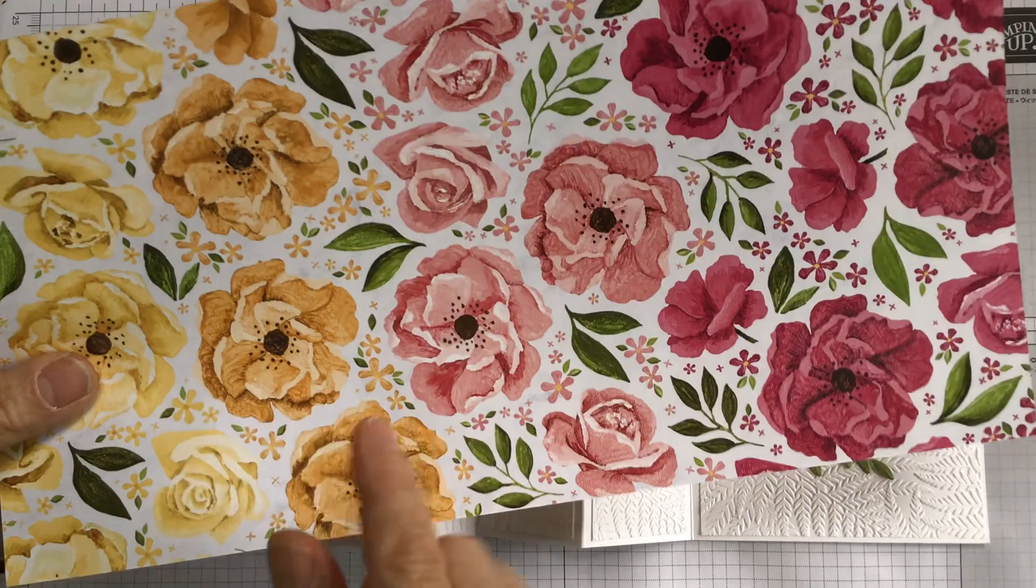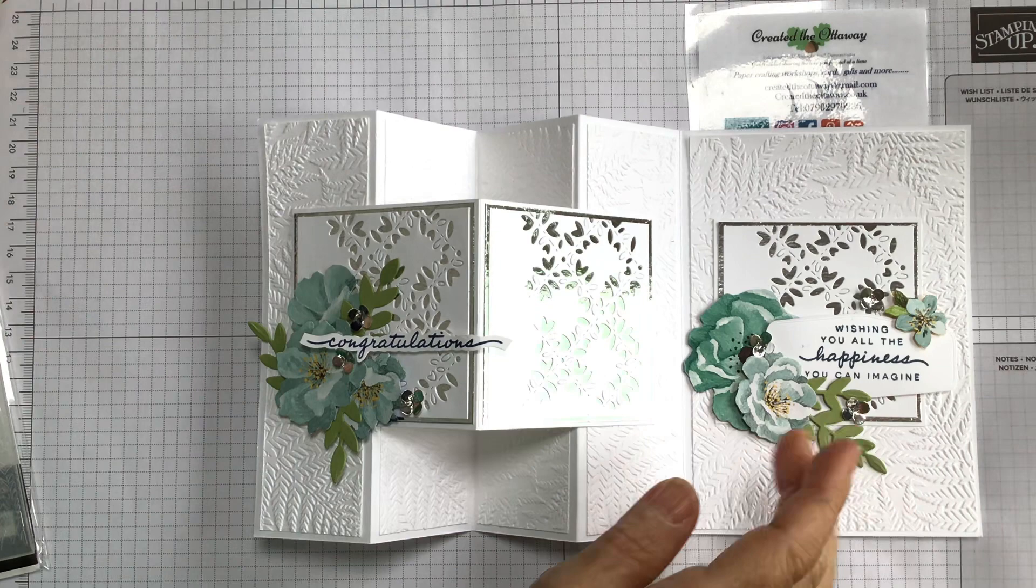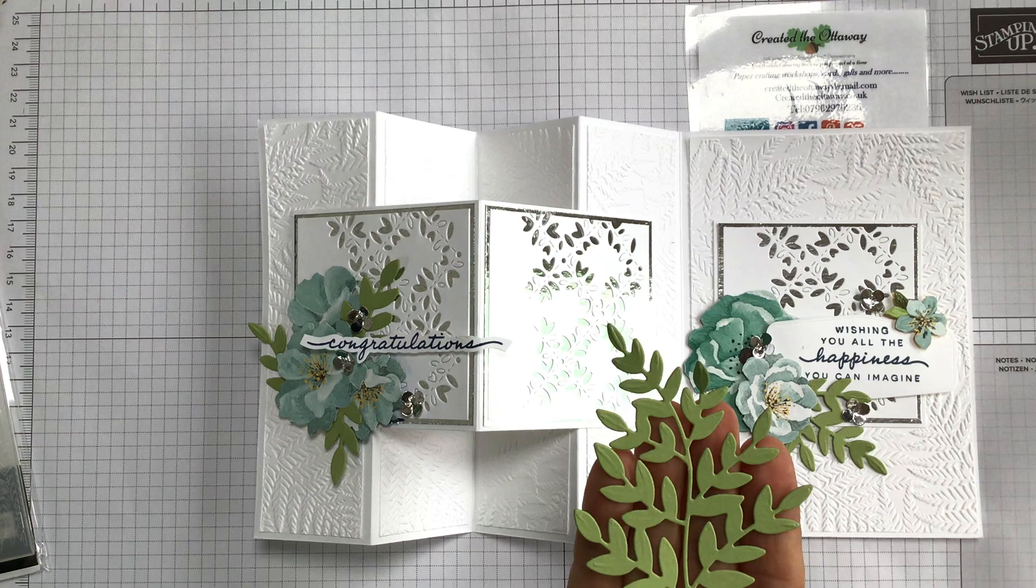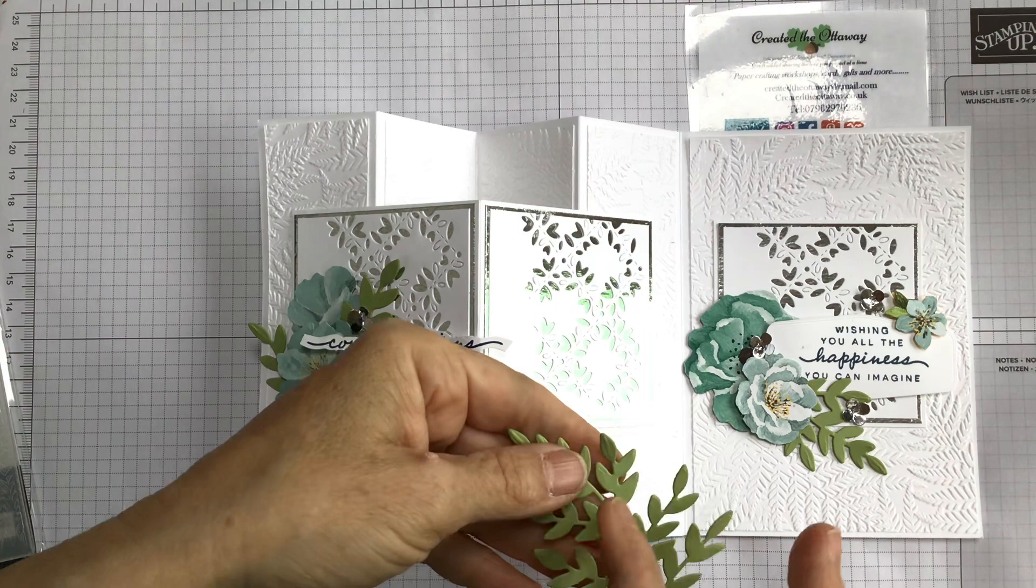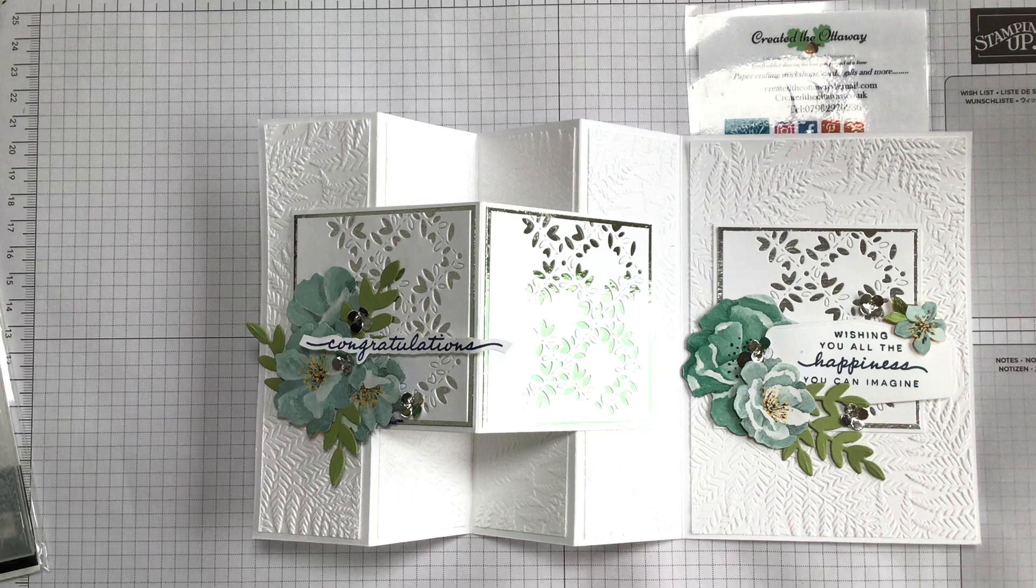Then I have fussy cut some of this paper, which is from the Happiness Abound suite. There's loads of different flowers on it and different papers, and I've just picked some out. For the leaves, I was going to fussy cut them, but do you remember the Forever Fern set? Have you all got that on your shelves gathering dust? Get it out, die cut one of those leaves, and you can cut it up and use that as well. And then just for a little bit of bling, I've put some little silver flowers from an old retired punch from Stampin' Up.